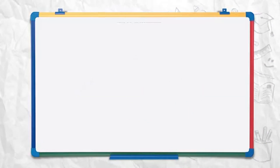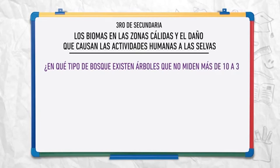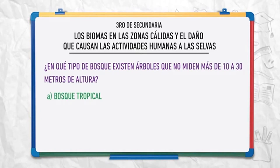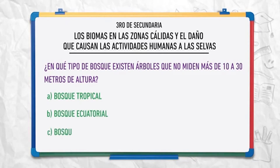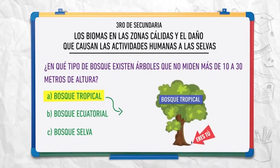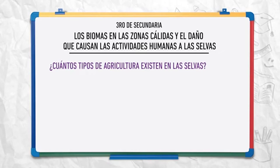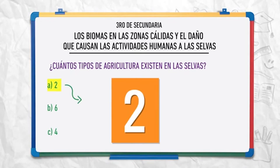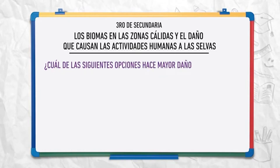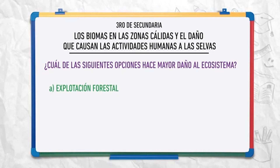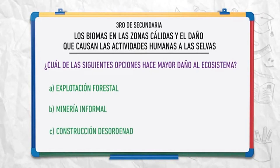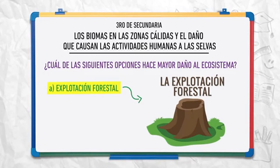Ahora es tu turno. ¿En qué tipo de bosque existen árboles que no miden más de 10 a 30 metros de altura? ¿Bosque tropical, bosque ecuatorial, o bosque selva? ¡Así es! Los árboles de 10 a 30 metros de altura se encuentran mayormente en el bosque tropical. ¿Cuántos tipos de agricultura existen en la selva? ¡Correcto! Existen dos tipos: la agricultura migratoria y la agricultura moderna. ¿Cuál de las siguientes opciones hace mayor daño al ecosistema? ¡Así es! La explotación forestal es la que causa mayor daño y destrucción al ecosistema.